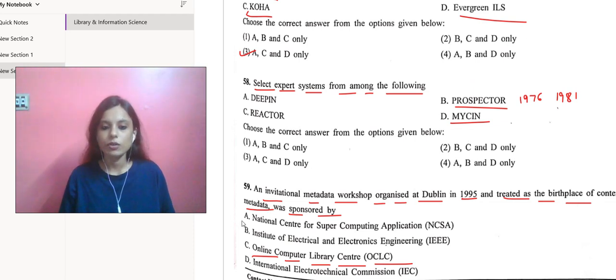We can also include option A, National Center for Super Computing Application, because NCSA is also there. So we are going to consider option A and C as the correct answers.